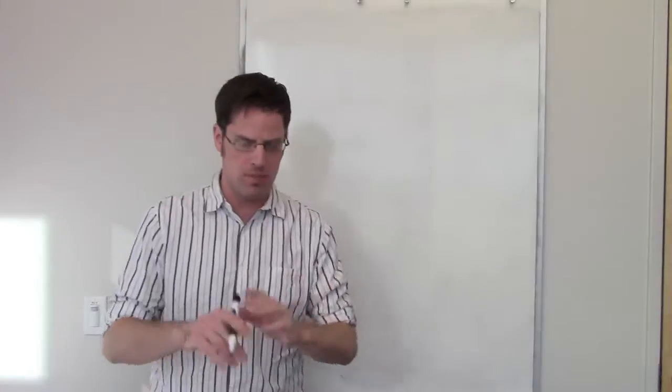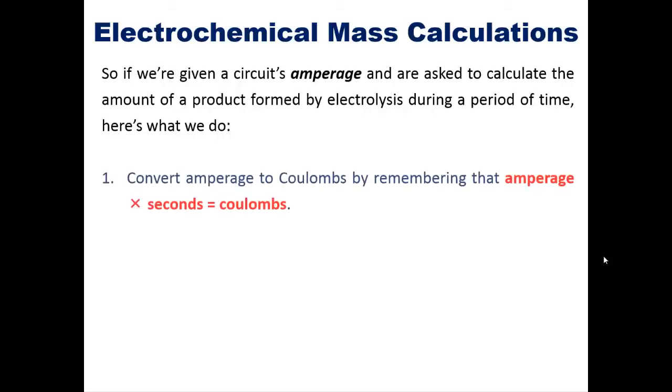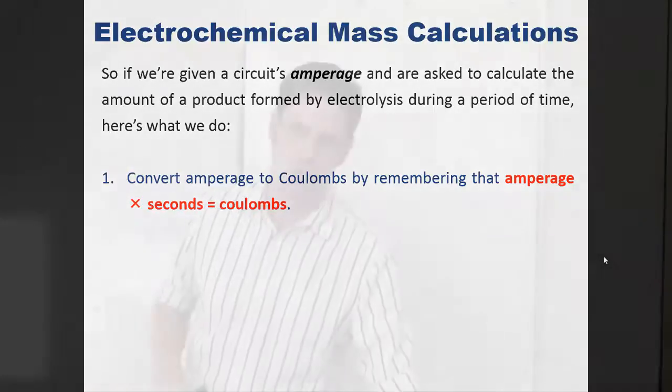As I talked about in the lecture that I'm going to show you a piece of right here, if we're given a circuit's amperage and we're asked to calculate the amount of product formed by electrolysis during a period of time, there are certain steps that we have to follow. The first one is we need to convert the amperage to Coulombs by remembering that amperage times seconds equals Coulombs.